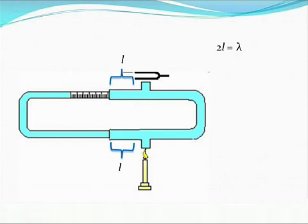When that happens, the candle will flicker. So what we do is: we initially take down the reading when the candle flickers with both path lengths equal. We then move the tube on the right further to the right until the candle starts flickering again, and note down that reading. The difference in the readings will be l. Since the candle is flickering again, constructive interference is taking place again. We know the path difference between two consecutive constructive interferences is lambda, so 2l equals lambda.